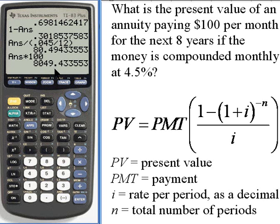So what this is saying is that if I deposit $8,049.43 into an account which pays 4.5% compounded monthly, then every month I can take out $100, and I can do that for the next 8 years.